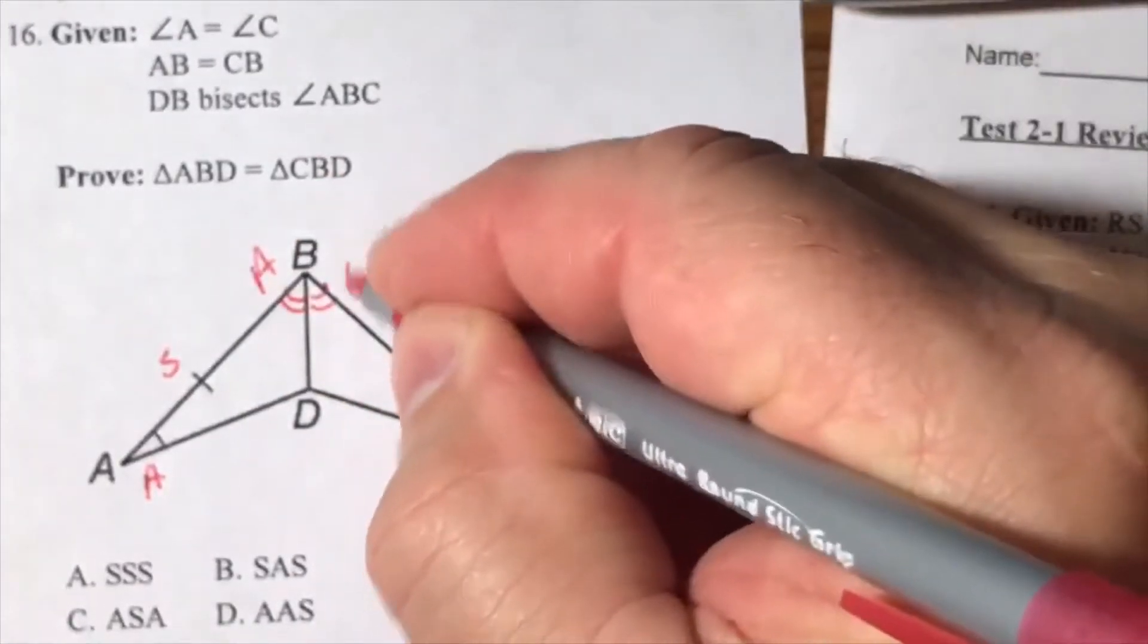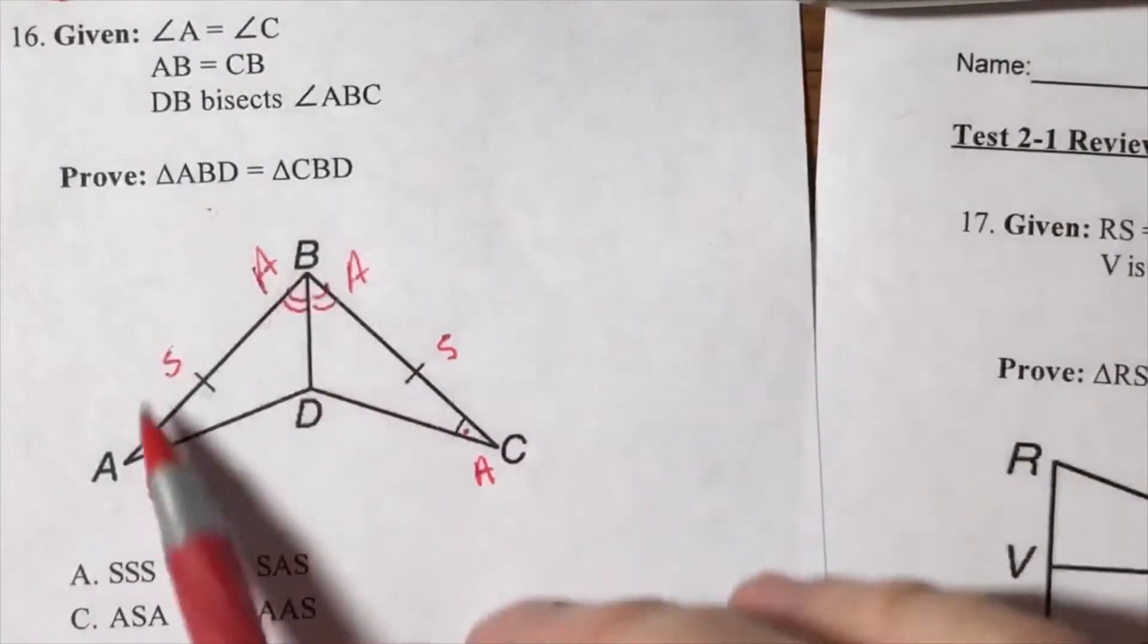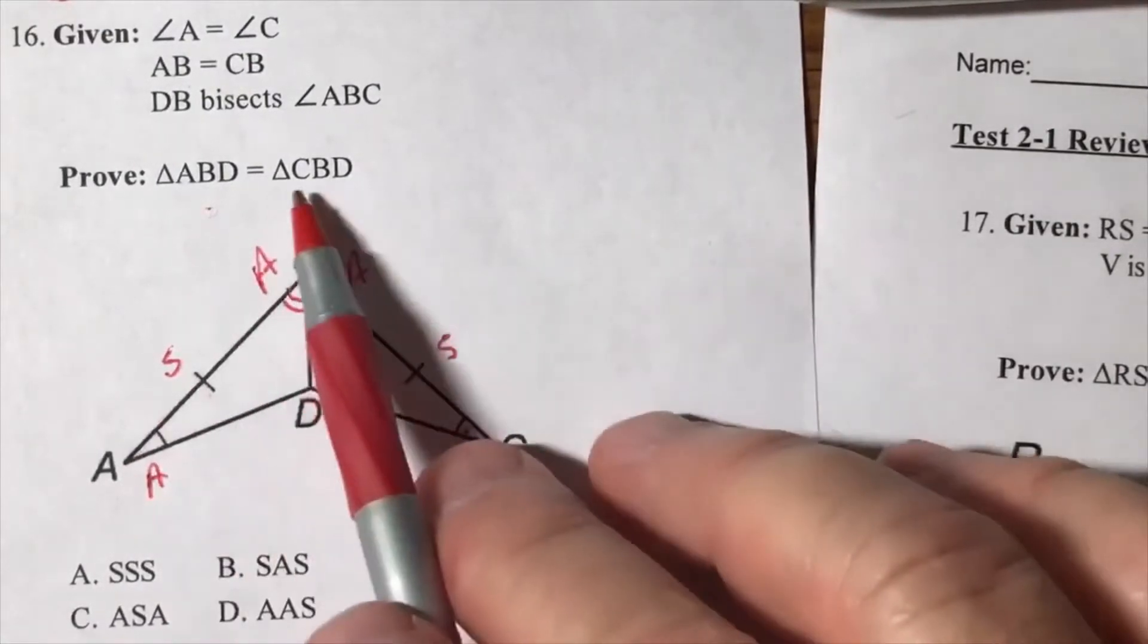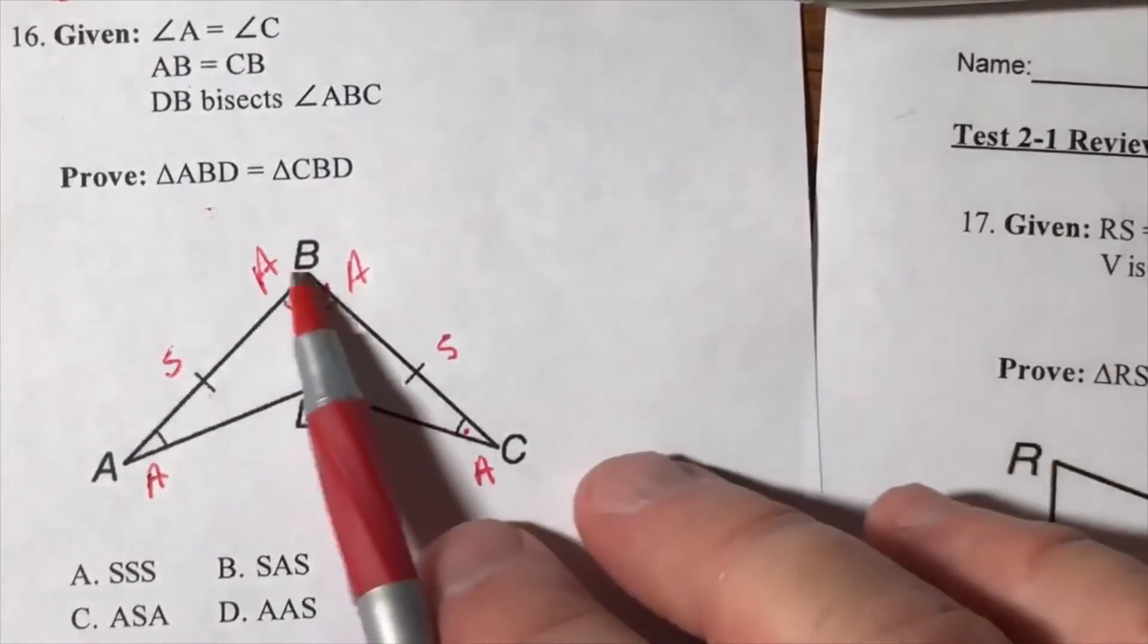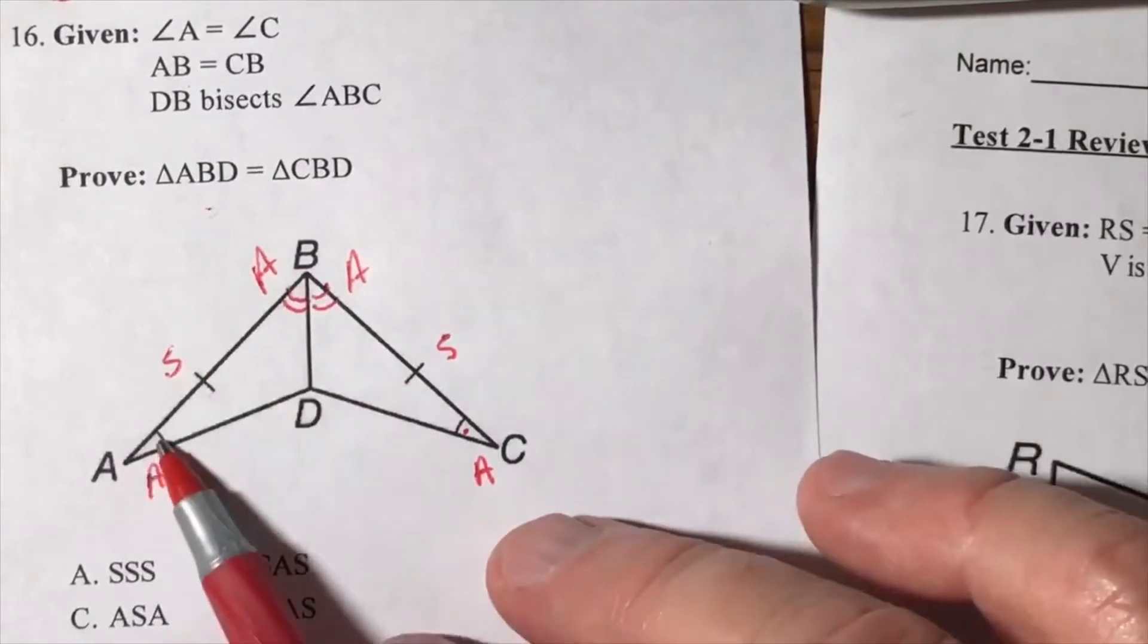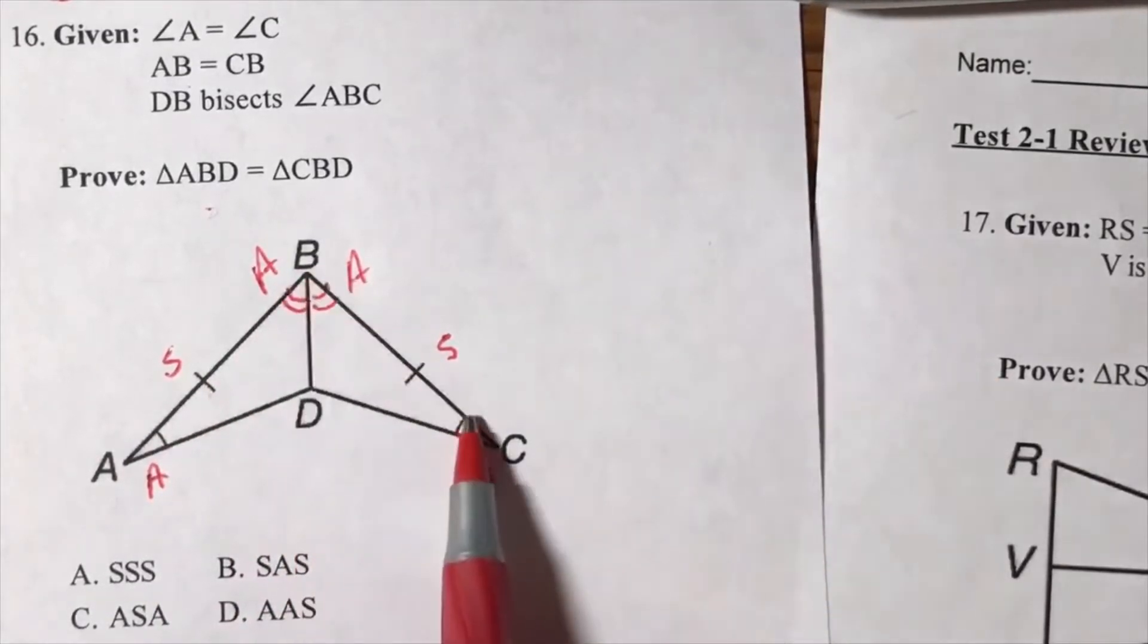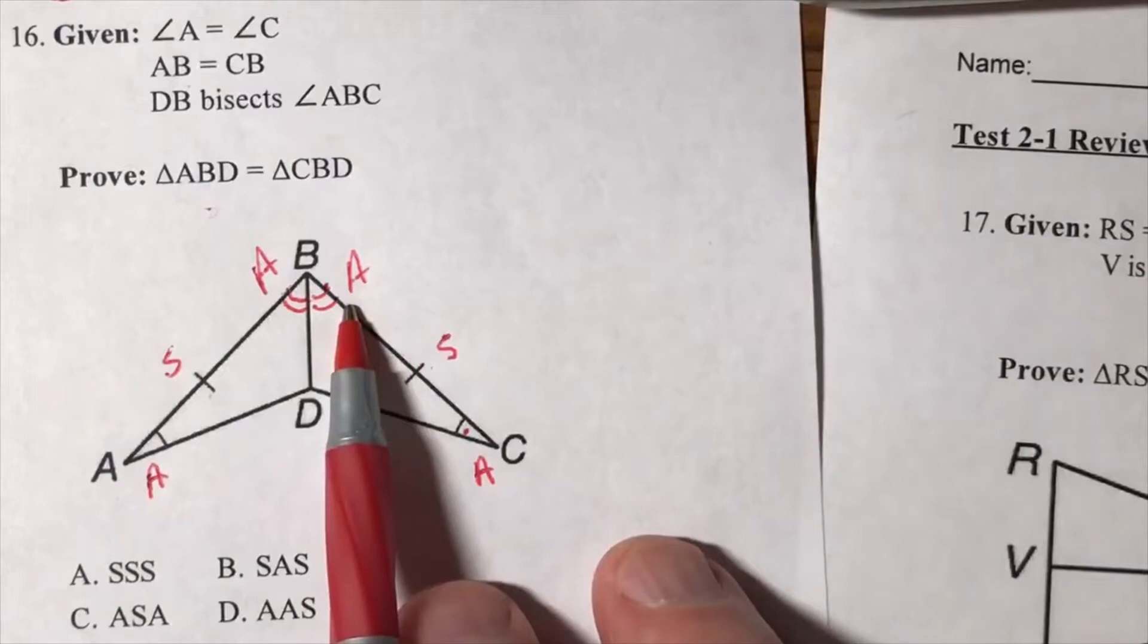I got me an A here and an A here. So we are proving triangle ABD is congruent to triangle CBD. This triangle here has an angle-side-angle that's congruent to an angle-side-angle.